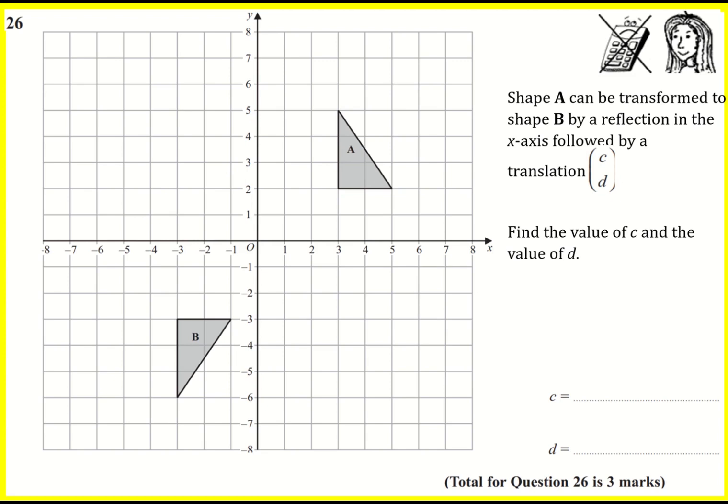Shape A can be transformed to shape B by a reflection in the x-axis followed by a translation vector (c, d). Find the value of c and the value of d. So shape A can be transformed to shape B by a reflection in the x-axis followed by a translation. We firstly need to actually perform this reflection.